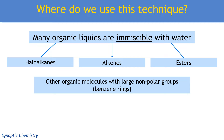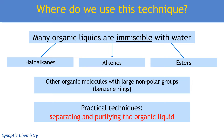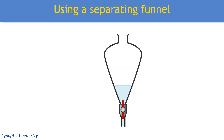Obviously, there are loads of different reaction conditions. This video is not about how you make a haloalkane, an alkene, or an ester, because they all have different reaction conditions. What we're looking at here on the practical side is how we separate that liquid and purify it — how we get the organic liquid away from all the other substances that might be in the reaction mixture. One of the most common things is that we're going to have aqueous substances, and our leftover reagents are probably going to be aqueous.